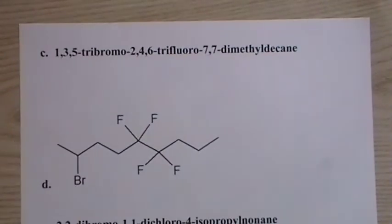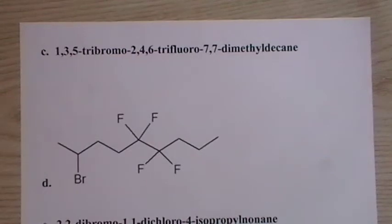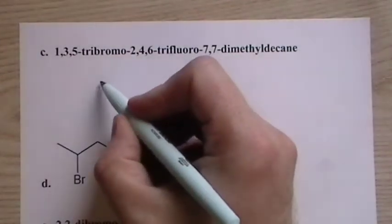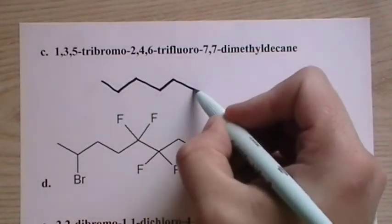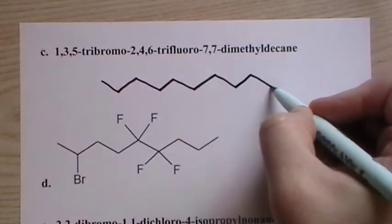Take a look here. One, three, five, tribromo. So we have one, two, three, four, five, six, seven, eight, nine, ten. Okay, that's decane.